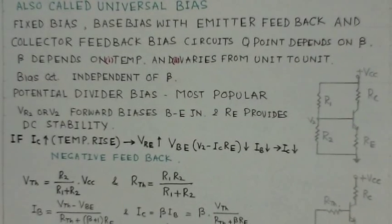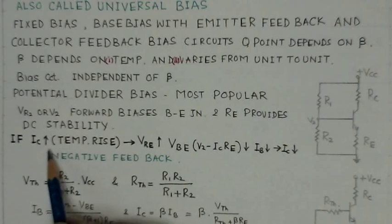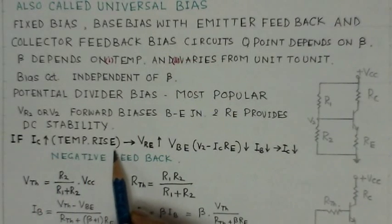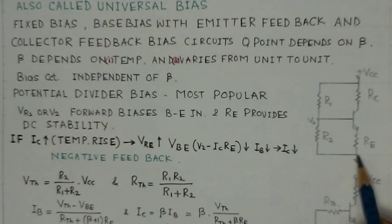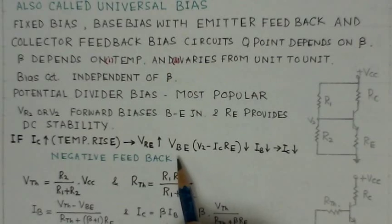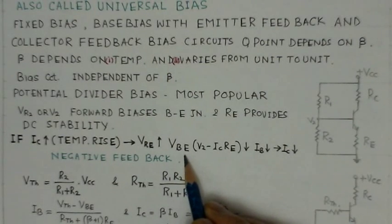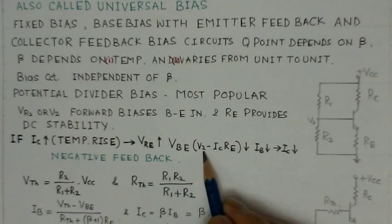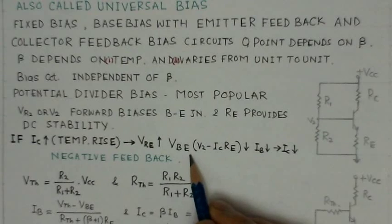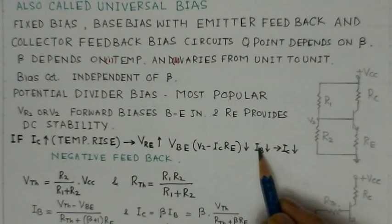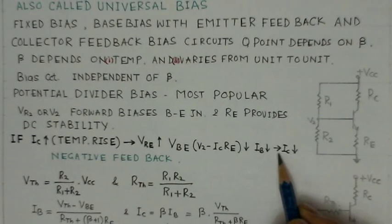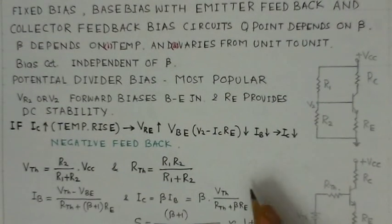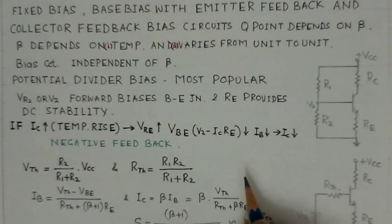If IC, the collector current, increases due to temperature rise, then VRE — the voltage across RE — also increases. When VRE increases, by the relation VBE = V2 minus IC×RE, VBE reduces, which means IB the base current reduces. Reduction of base current then reduces IC. This is a kind of negative feedback that stabilizes variations due to temperature or variation in beta.